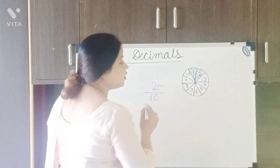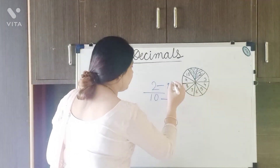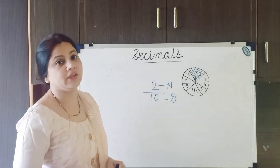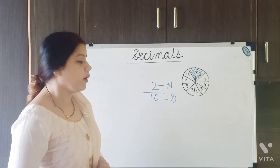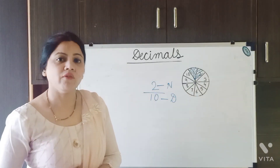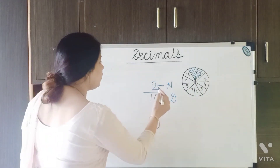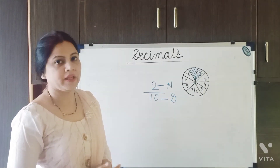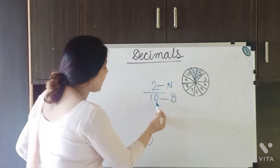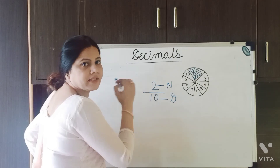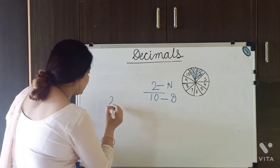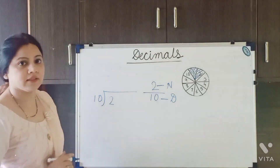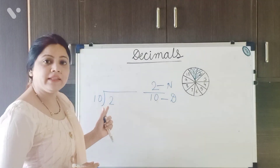So 2 is the numerator and 10 is the denominator. We will learn how to convert this fraction into a decimal fraction. If any number is written in the form of a fraction, the numerator acts as the dividend and the denominator acts as the divisor. So we write 2 as the dividend and 10 as the divisor. Can we divide 2 by 10?